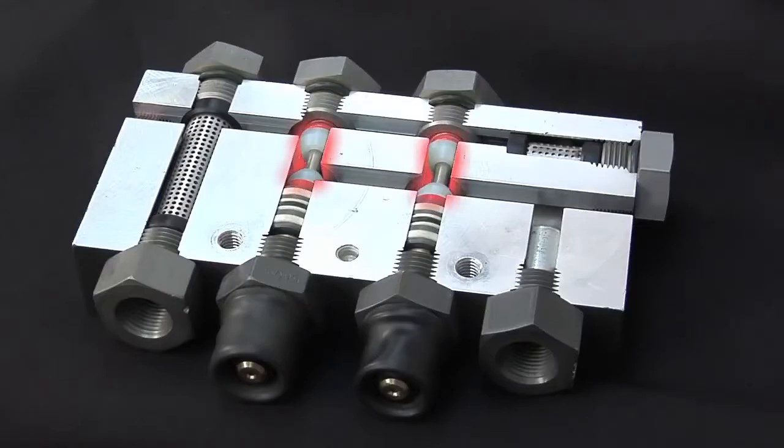Here are the two power poppets which are sitting on their seats until they are pushed open with the manual levers or by pilot pressure. Notice here the channel that extends the length of the block.